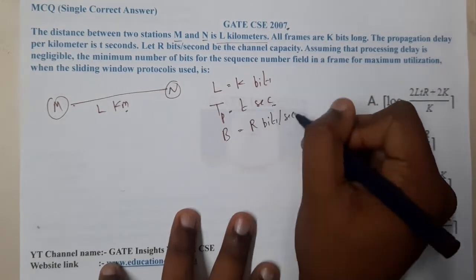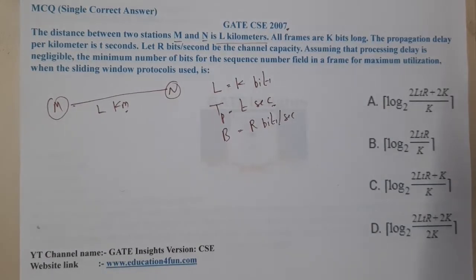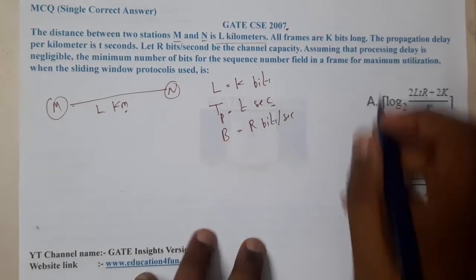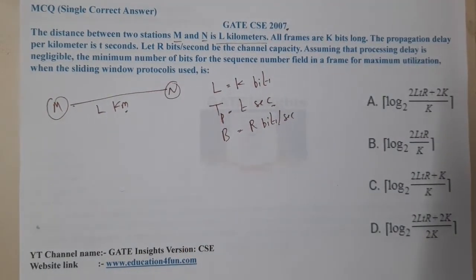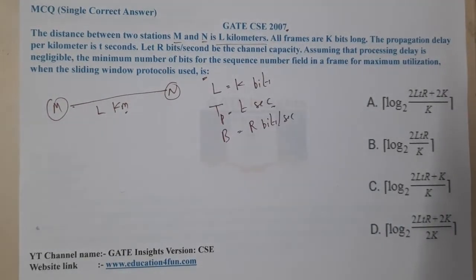Assume that processing delay is negligible. The minimum number of bits for the sequence number field in a frame for maximum utilization when the sliding window protocol is used.